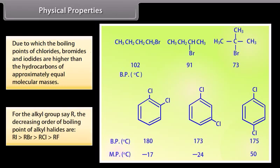For the alkyl group R, the decreasing order of boiling point of alkyl halides are RI has the highest boiling point, followed by RBr, then RCl, and then RF.